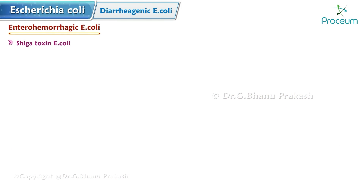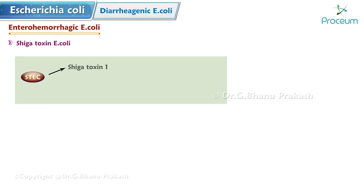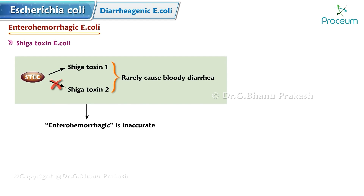The STEC nomenclature has been confusing. For example, STEC that produce Shiga toxin 1 but not Shiga toxin 2 rarely cause bloody diarrhea, so 'enterohemorrhagic' is an inaccurate term for such organisms. 'Shiga toxin-producing E. coli' can also be confusing because providers sometimes interpret detection of Shiga toxin to mean the patient is infected with Shigella. The term 'Shiga-like toxin-producing E. coli' has fallen into disuse.